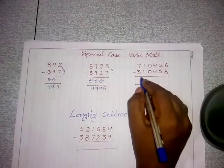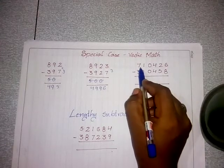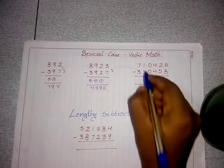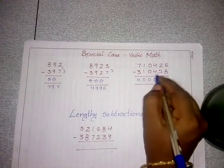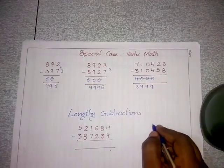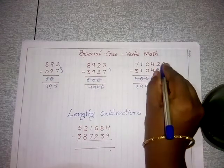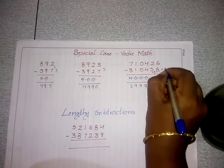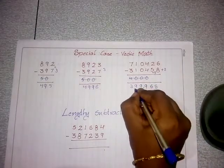Another special case: repeated digits subtract to give 4000, but the next one is mismatch so reduce to 3999. Complement of 5 is 5; 5 plus 2 equals 7. Next number is mismatch so write 6. Complement of 8 is 2; add 2 to 6 equals 8. This is the answer.